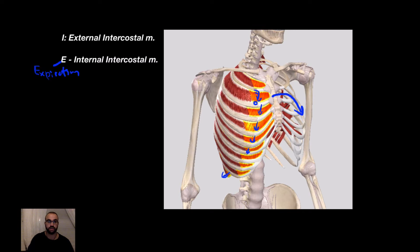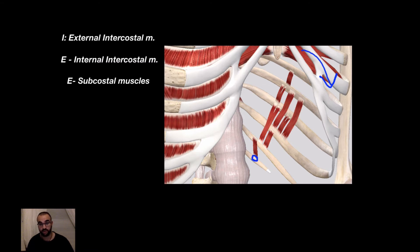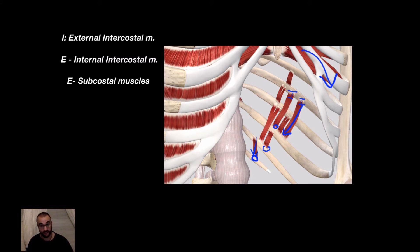The next muscle is also an Expiration Muscle: the Subcostal Muscle, found on the inferior and posterior border of the ribs near the costal angles. They support Expiration by pulling the chest down. They originate from the inferior rib and insert at the superior ribs. When these muscle fibers contract, they pull in a downward direction. The Subcostal Muscles usually jump over one or two ribs, and they are found on the inside of the rib cage on the posterior side near the costal angles.